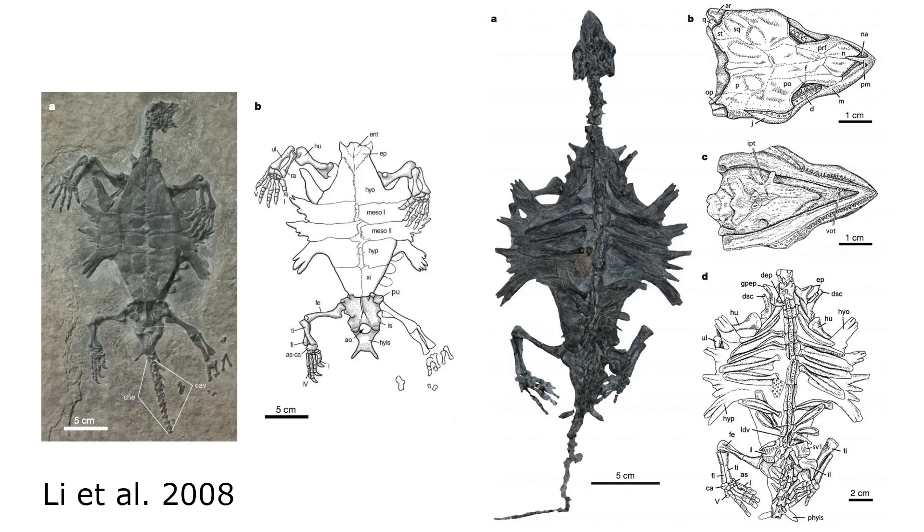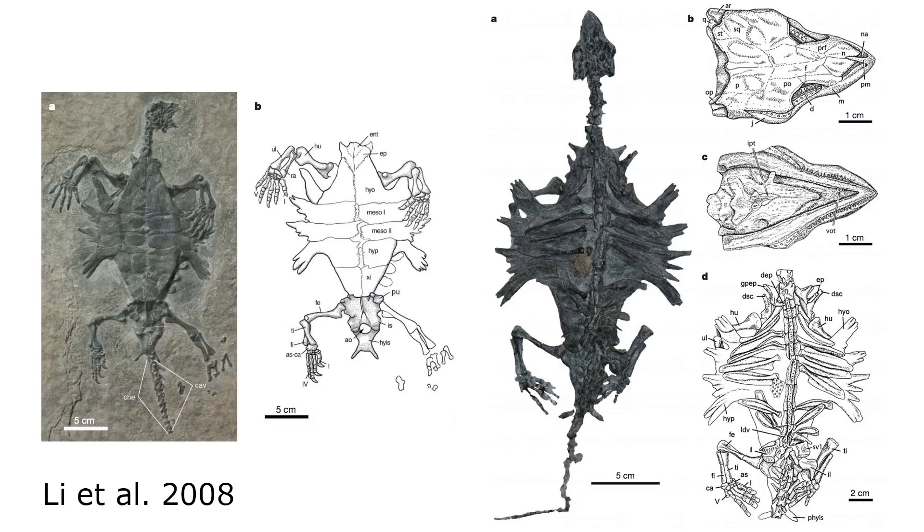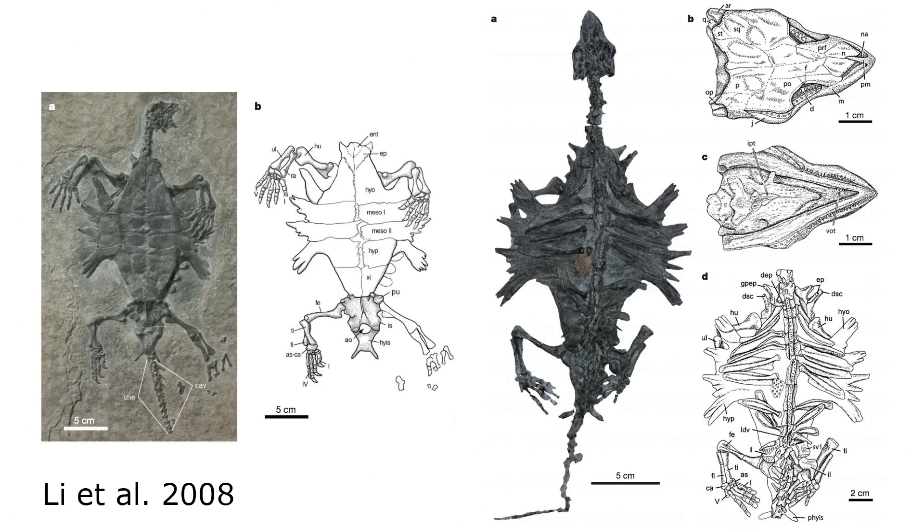The idea of turtles originating from a hole-less or anapsid ancestor gained further support when in 2008 a new fossil was found from the late Triassic of China called Odontochelys, which was 10 million years older, dated to around 220 million years ago. Odontochelys had only a plastron — that is the bottom part of the shell — and it did not have an ossified top part of the shell, or the carapace, which was formed by the expansion of the ribs and the rib cage on the back. The preserved skull lacked any holes, and paleontologists had no reason to think that turtles were anything other than an anapsid reptile.